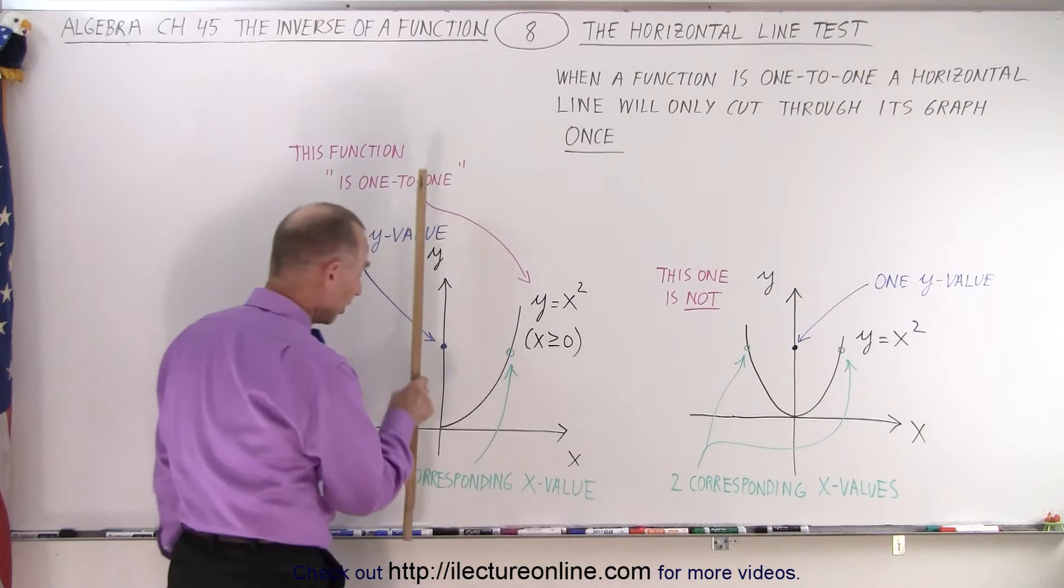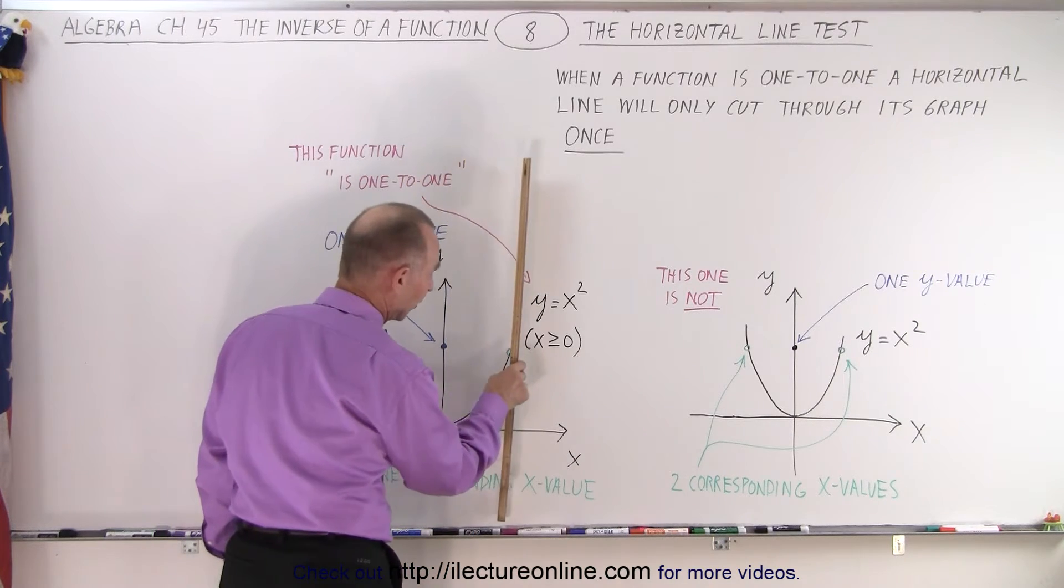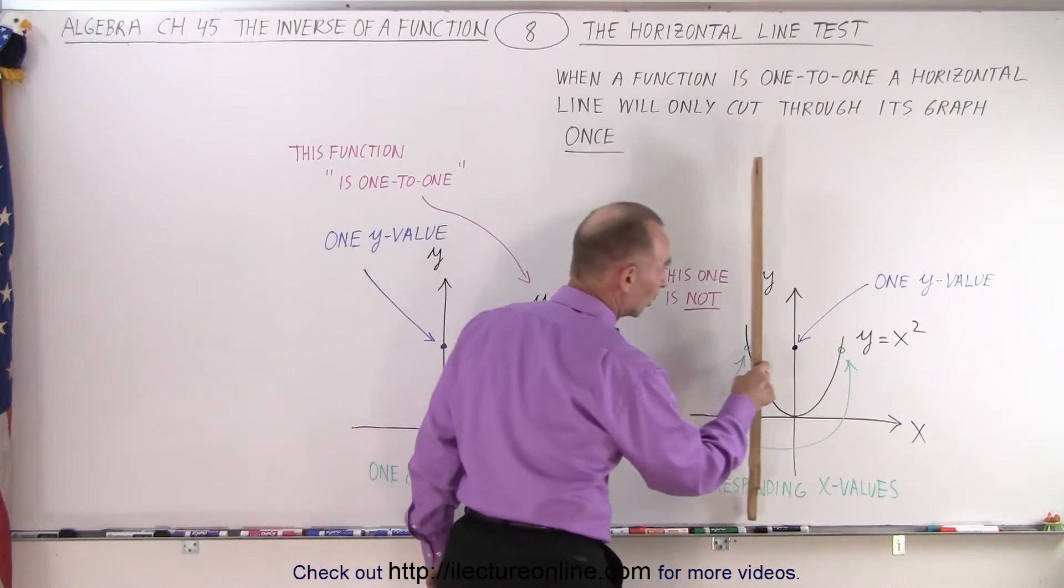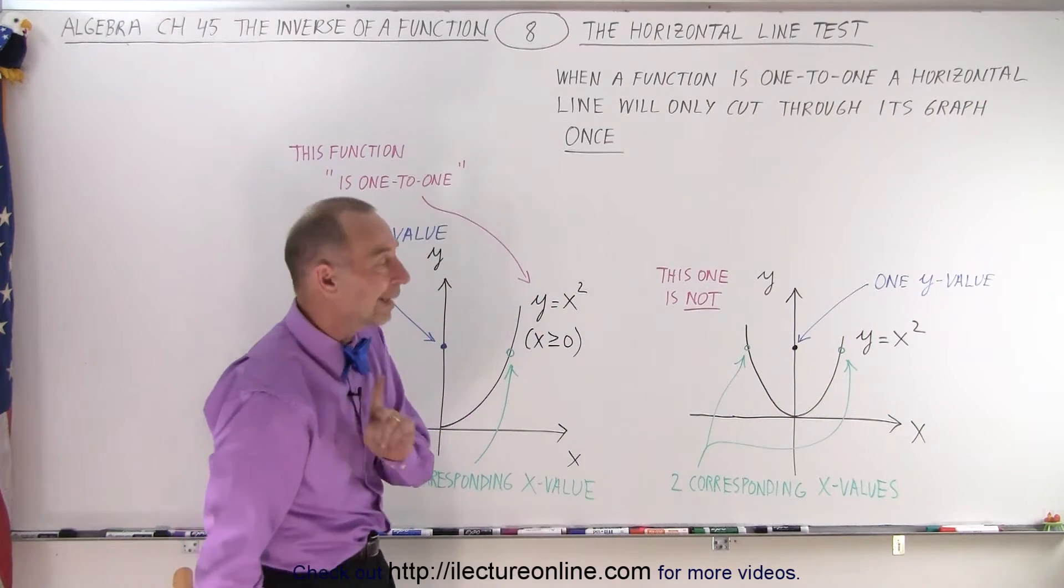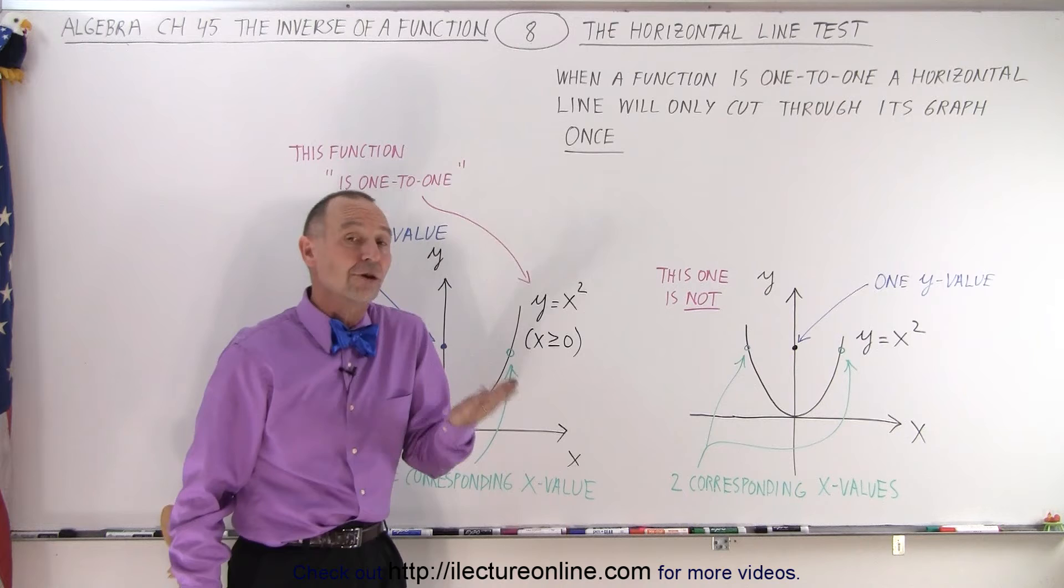So we can do that for both of these functions. Here you can see that it only crosses the line once. Here you can see that it only crosses the line once at any given point. That's called the vertical line test, and it's to see if it's a function or a relation.